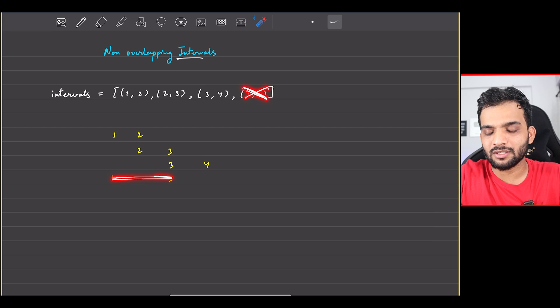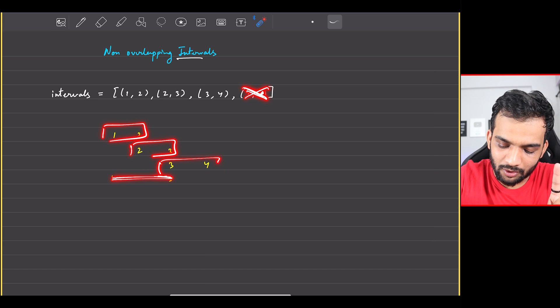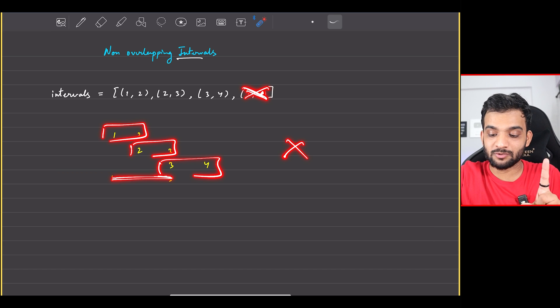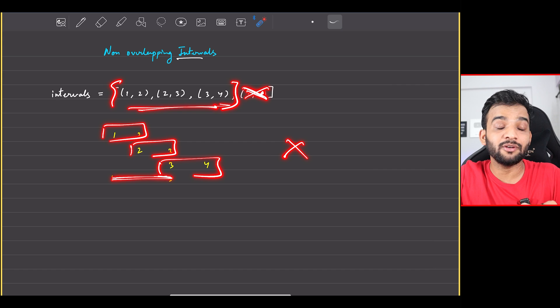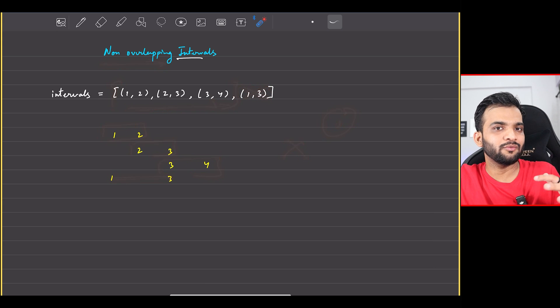So what I'll do is I'll remove (1,3). If I remove (1,3), that is one interval: (1,2), (2,3), (3,4) - no overlap, no overlap. So I can still take this array and there will be no overlap between them. There will be no non-overlapping intervals.